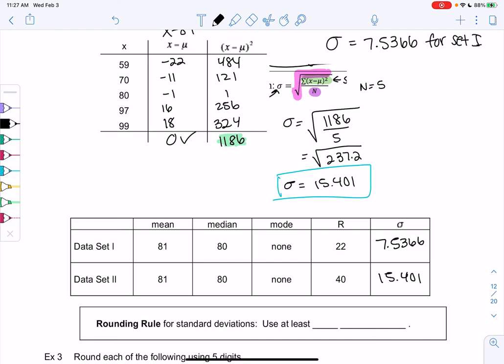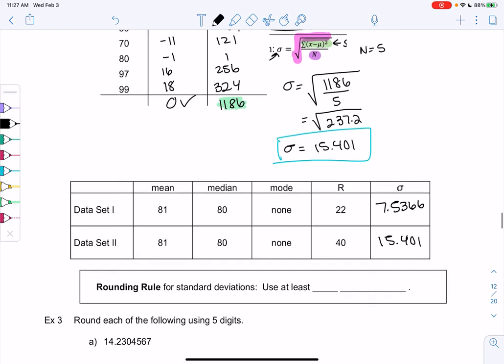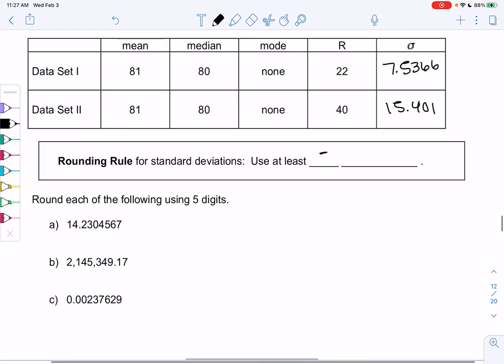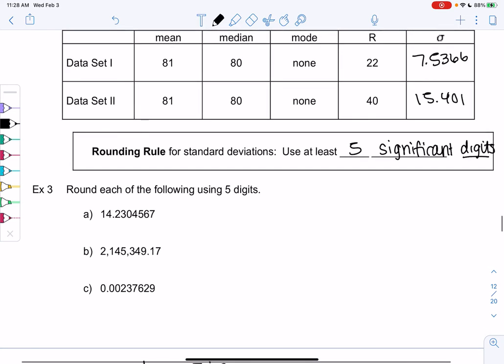And so the rounding rule, we'll go over that. It's not going to be decimal places. It's going to be digits. So the rounding rule for standard deviation is at least 5 significant digits. And we'll often just call it digits in this class to make it a little bit shorter. So let's review how that works in example 3, and then we'll take a little break from the video.